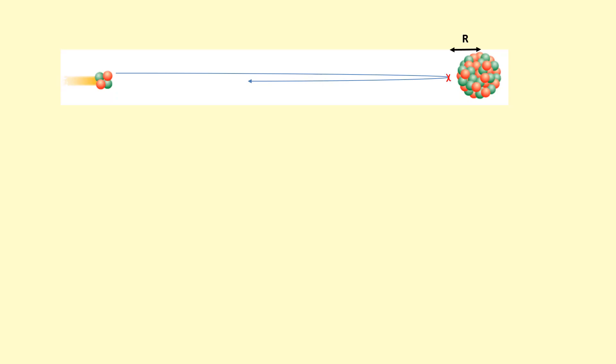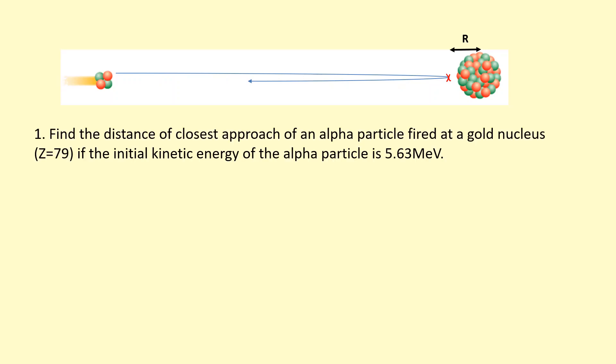This is called the distance of the closest approach. I'm going to use it to estimate the radius of the gold nucleus. So what I'm doing here is find the distance of the closest approach of the alpha particle fired at the gold nucleus if the initial kinetic energy of the alpha particle is 5.63 megaelectron volts.